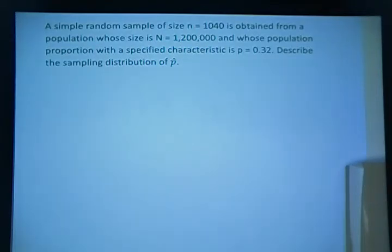A simple random sample of size n equals 1040 is obtained from a population whose size is N equals 1,200,000 and whose population proportion with a specified characteristic is p equals 0.32. Describe the sampling distribution of p hat.